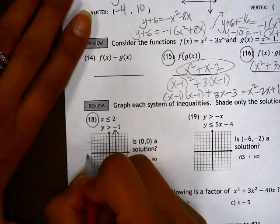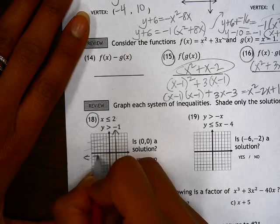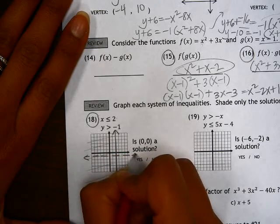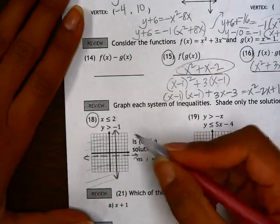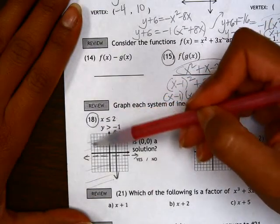Y equals negative 1 is a horizontal line. I'm going to make it dotted since it's not equal to, just greater than. Greater than would be above.